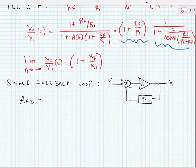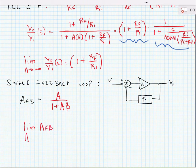Let's look at this in a slightly different way. Here we're going to look at a single feedback loop where we have a forward gain component A and a feedback component β that's connected in negative feedback. Now for this single feedback loop, we know that the gain is equal to A divided by (1 + Aβ). The limit of AFB as A goes to infinity is equal to 1/β.